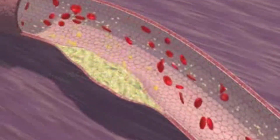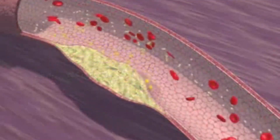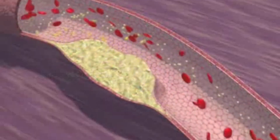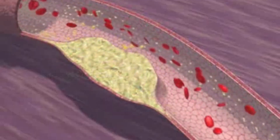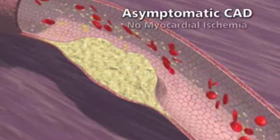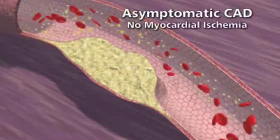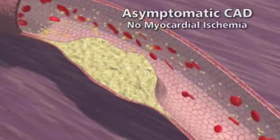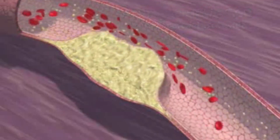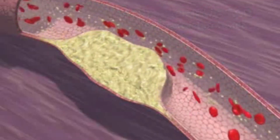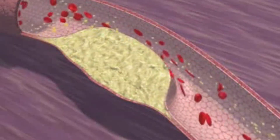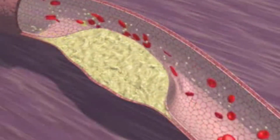Some plaques never obstruct the coronary blood flow. The patient with asymptomatic coronary disease has no chest pain and no myocardial ischemia. A plaque can enlarge to the point that the blood flow is compromised, and the patient may have chest pain but only with exertion.